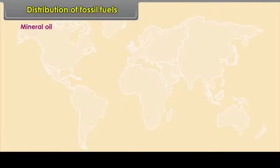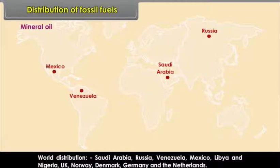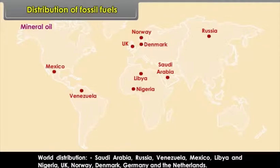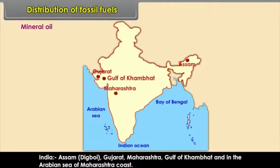Mineral oil world distribution: Saudi Arabia, Russia, Venezuela, Mexico, Libya, Nigeria, UK, Norway, Denmark, Germany and the Netherlands. In India, mineral oil is found in Assam (Digboi), Gujarat, Maharashtra, Gulf of Khambhat and in the Arabian Sea off the Maharashtra coast.